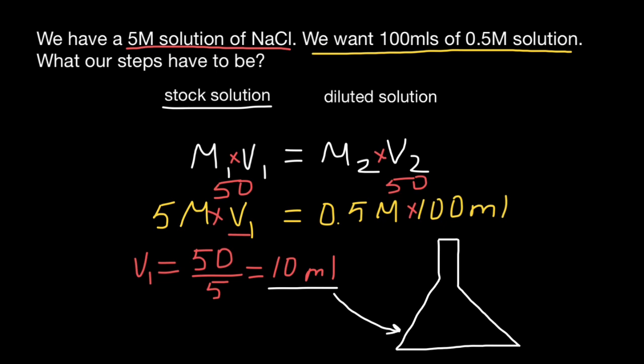So let's say this is going to be the volume. But as you see, we need 100 milliliters. So that means the difference between 100 and 10 milliliters would be 90 milliliters. We have to add deionized water.